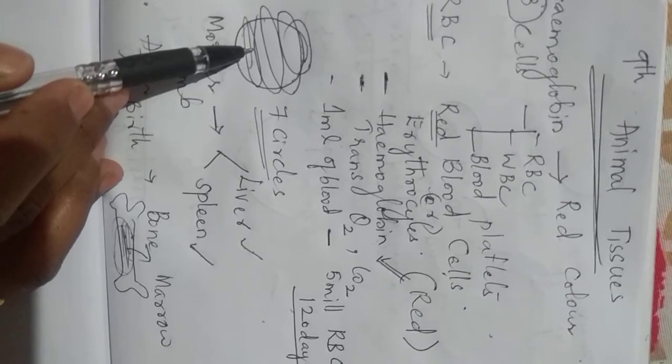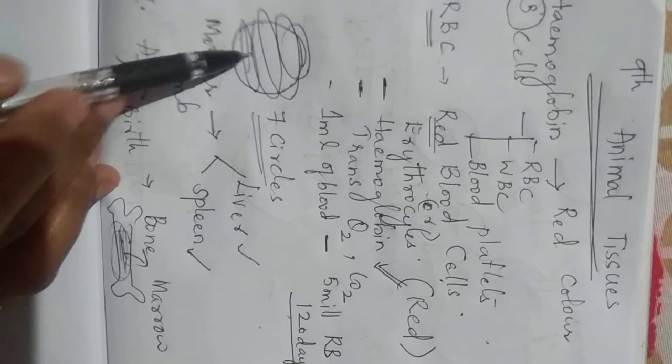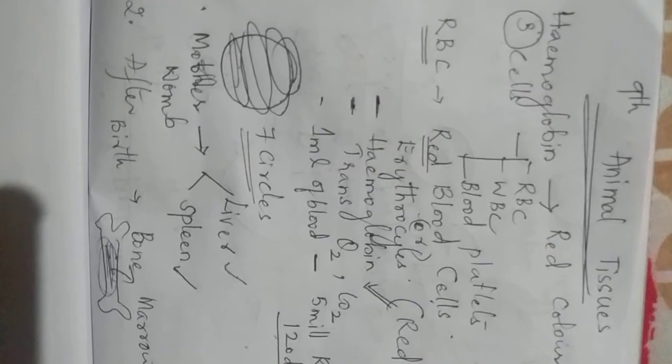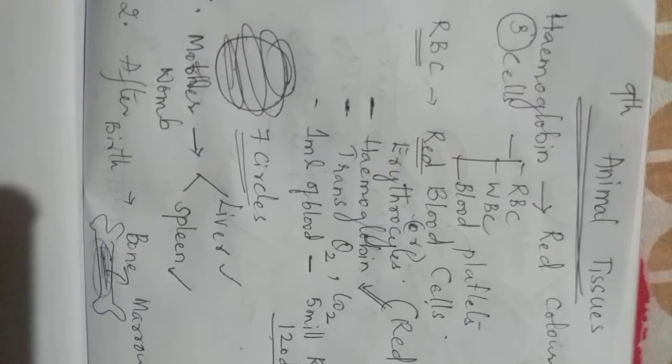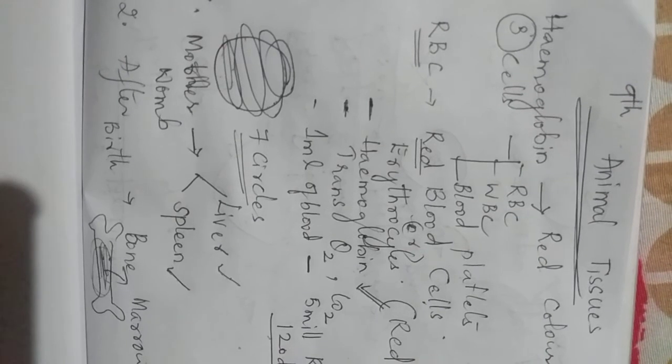We can draw seven circles to the earth with all RBC in our body. And RBC, if we are in mother's womb, then it will be generated in liver and spleen. And after birth, RBC will be generated in bone marrow.